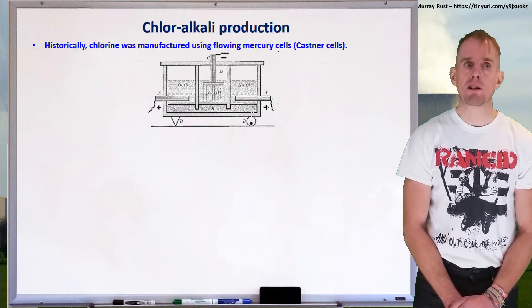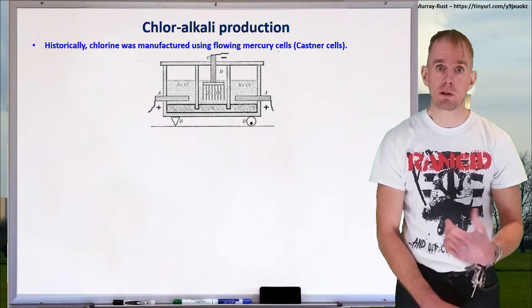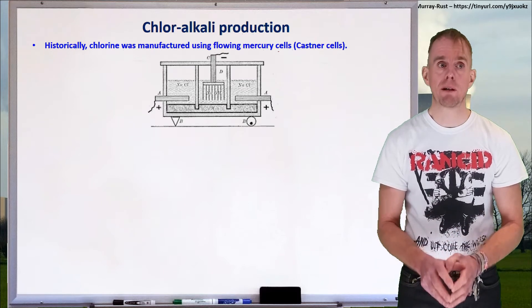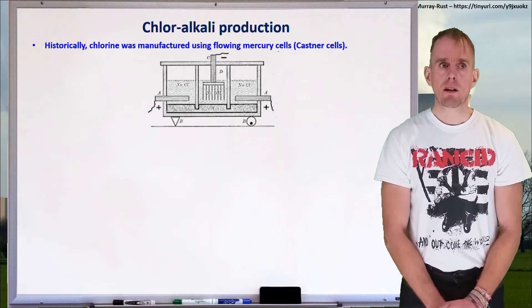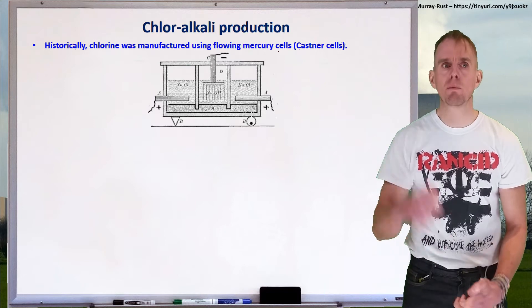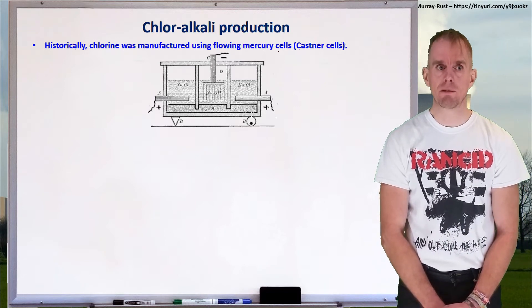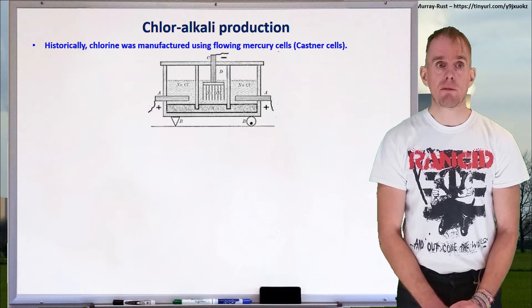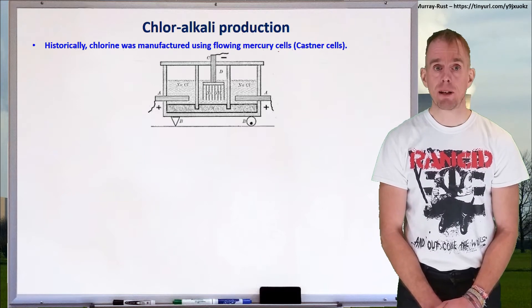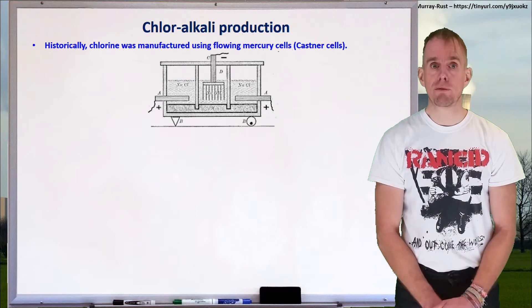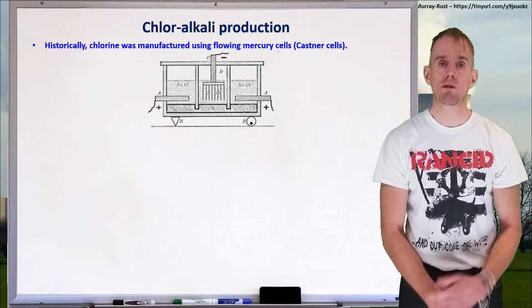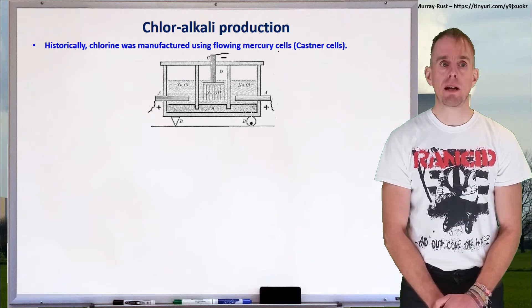I'd like to focus on chlorine production — firstly because it's quite personal to me, as I used to work on large chloralkali sites, and also because they're a very good example of sites with a very large electrical power demand. Historically, chlorine was first manufactured using flowing mercury cells called Kastner cells. The diagram on my whiteboard is an excerpt from Kastner's original patent. A solution of sodium chloride is used with carbon cathode electrodes and flowing mercury as the anode. Sodium amalgamates with the mercury to form a sodium mercury amalgam, which is then processed to give sodium hydroxide, or caustic soda, while chlorine bubbles off on the electrodes.